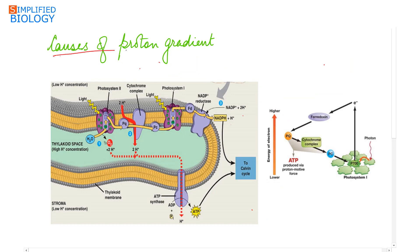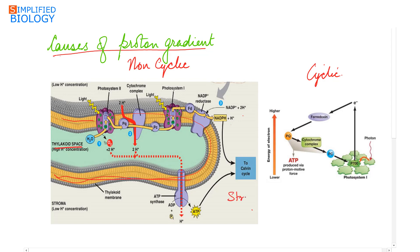The causes of proton gradient are seen during non-cyclic and cyclic photophosphorylation. In non-cyclic photophosphorylation, both photosystem 2 and photosystem 1 are involved and get excited simultaneously with solar energy. Near photosystem 2, splitting of water occurs, producing protons that are released into the lumen of the thylakoid. This is the first reason for a proton gradient between the lumen and the stroma.